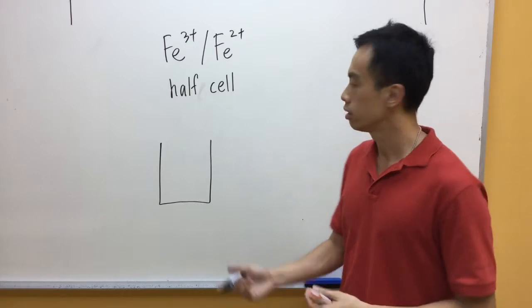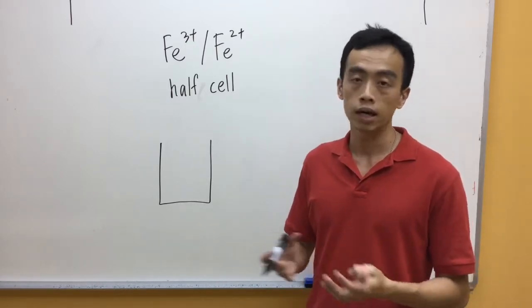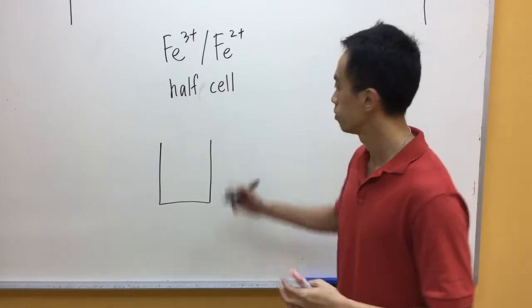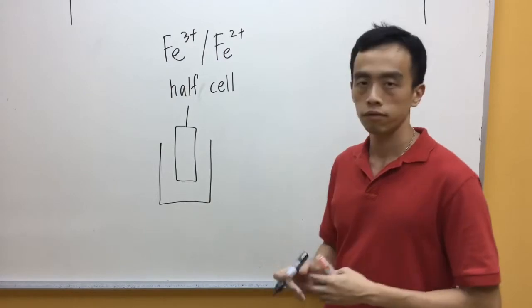The same thing, I'll draw the beaker. In this case, again, I'll need an inert electrode, because neither iron-3-plus nor iron-2-plus can function as an electrode. And after that, I'll draw the solution.